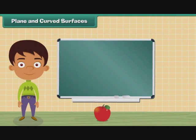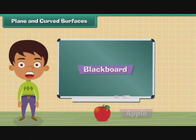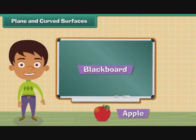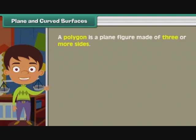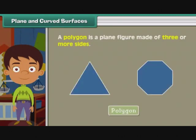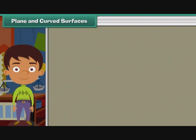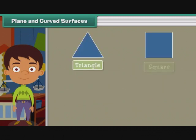Look at these two objects: blackboard and an apple. Blackboard has plane surfaces - surfaces which have length and breadth. When you touch the surface of an apple, its surface is not straight. This is a curved surface. A polygon is a plane figure made of three or more sides. Various types of polygons are triangle, square, rectangle, and pentagon. Now we'll study about plane figure sides and vertices.